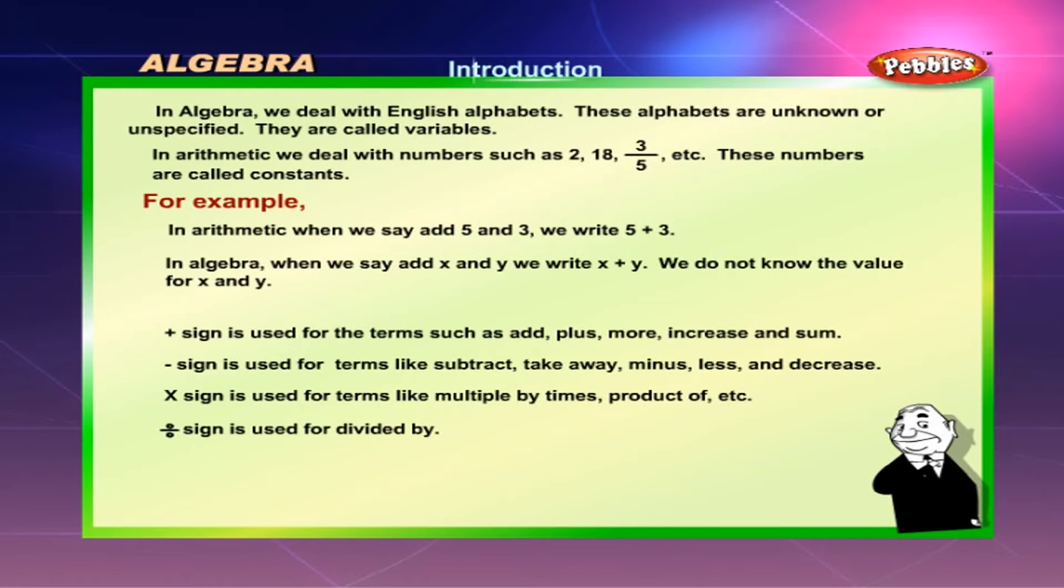For example, in arithmetic when we add 5 and 3, we write 5 + 3. In algebra when we add x and y, we write x + y. We do not know the value for x and y.